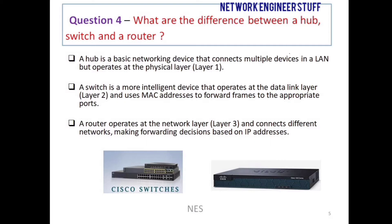Question number four: what is the difference between a hub, switch, and router? Always remember: a hub is a Layer 1 device, a switch is a Layer 2 device, and a router is a Layer 3 device. A hub is a dumb device — it only connects multiple devices in your LAN and operates at the physical layer. A switch is more intelligent than a hub and uses Layer 2 addresses, that is MAC addresses, for communication.